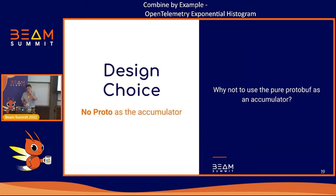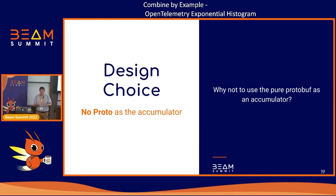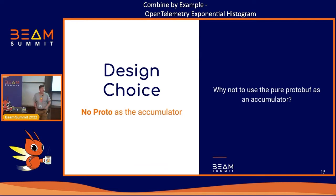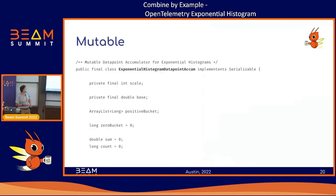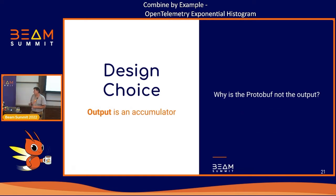First of all, we're not taking the proto as an accumulator. The proto in a Java implementation is immutable — you have the builder that's mutable, and then you build a new immutable object. If you want to rebuild it, you have to make a new builder, change it, and so on. We showed that the accumulator needs to be mutable, and that's for performance reasons. So we made a boiled-down version just as a Java class with the things you find in the proto. And for our use case, the output is also the accumulator.